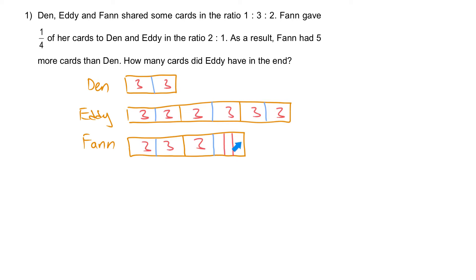She is going to give 2 units to Dan and 1 unit to Eddie. So I am going to start shifting it. This 3 units is going to move away — 2 units go here and 1 unit goes here. This is the final ratio.